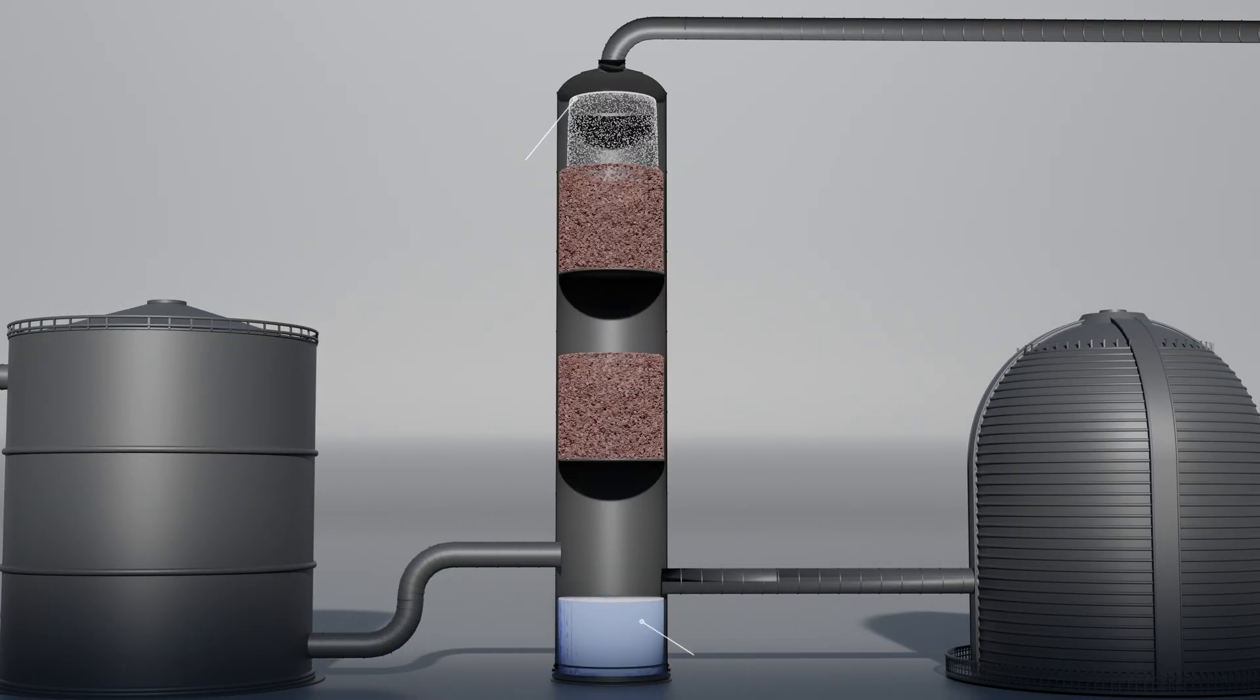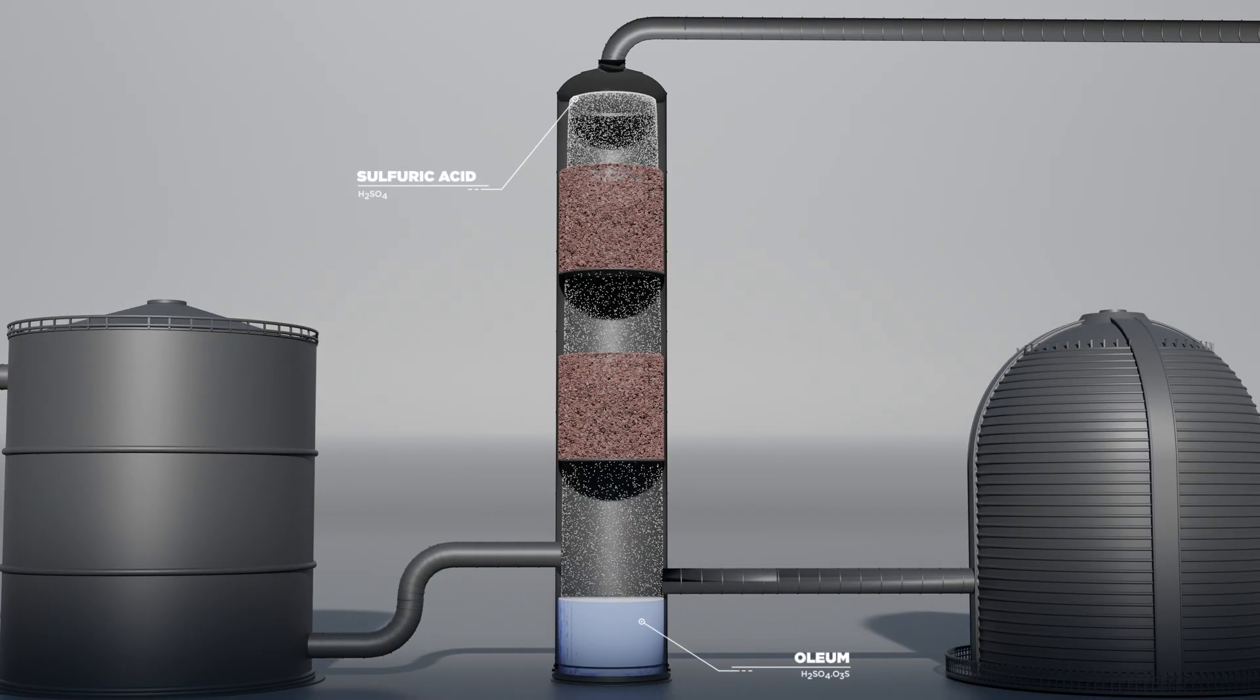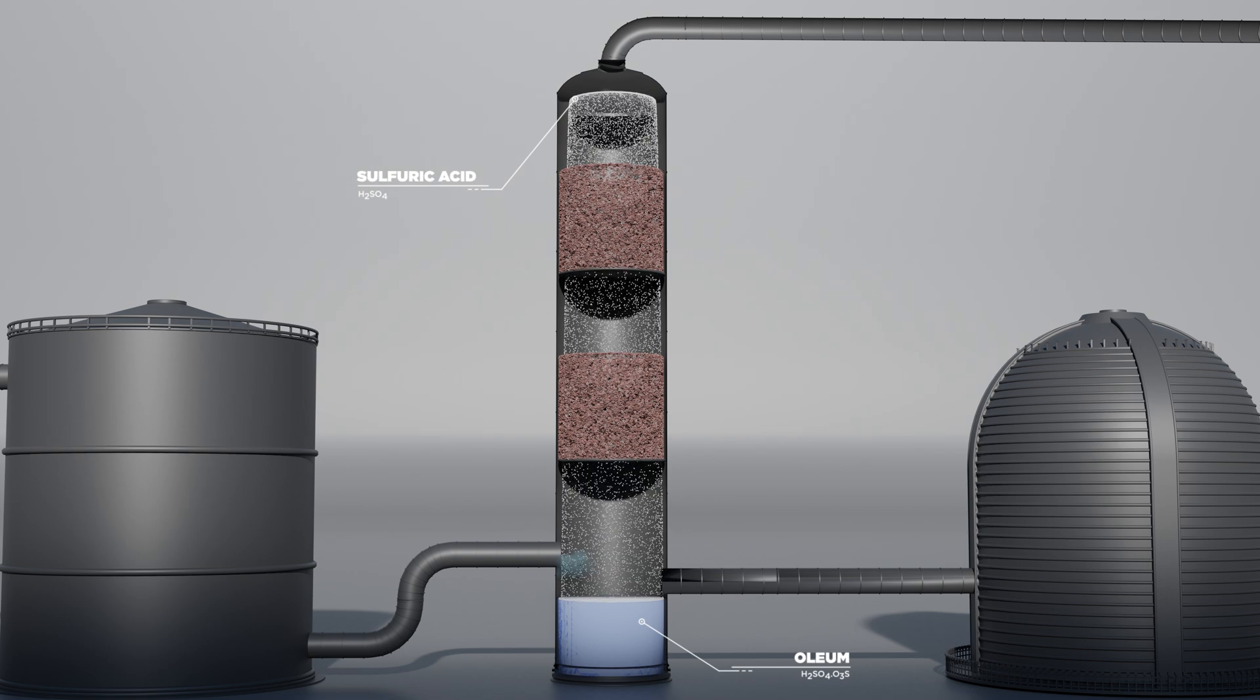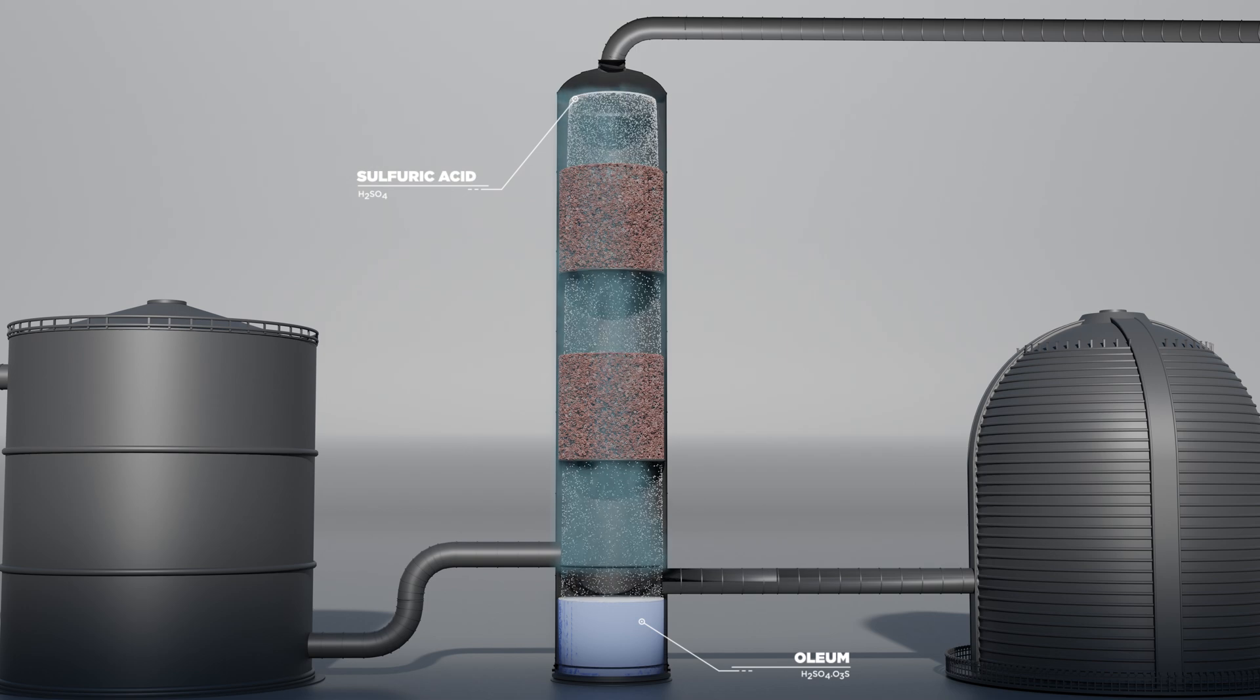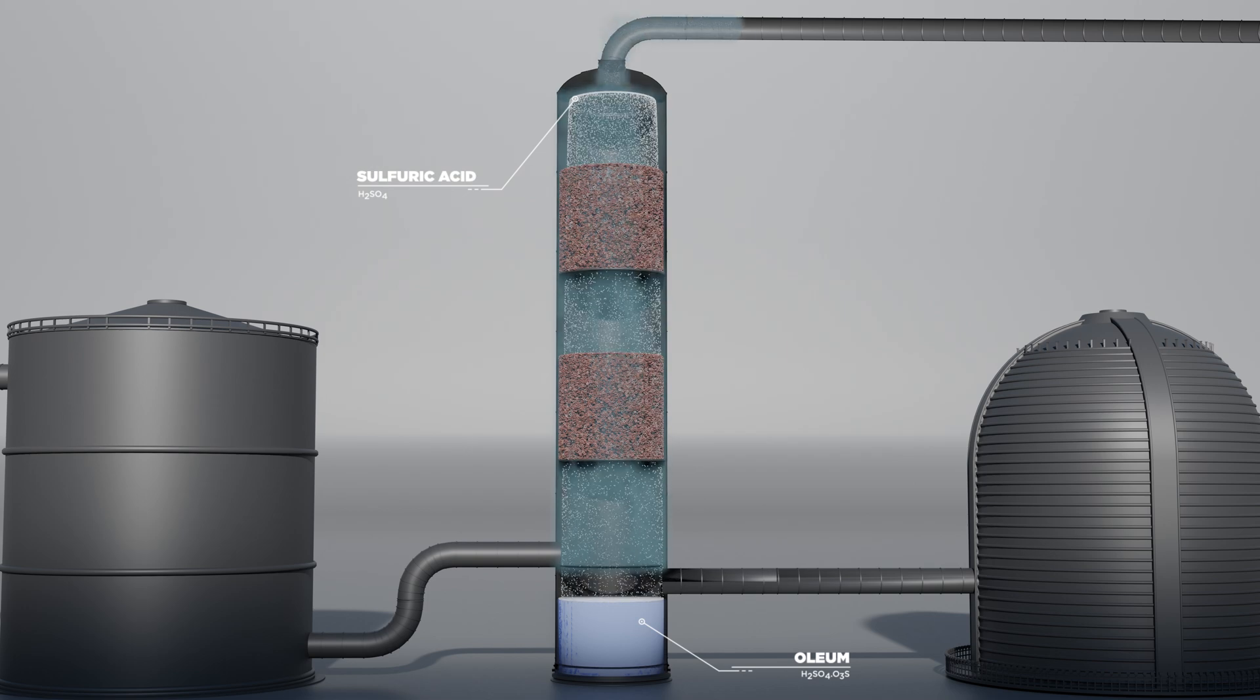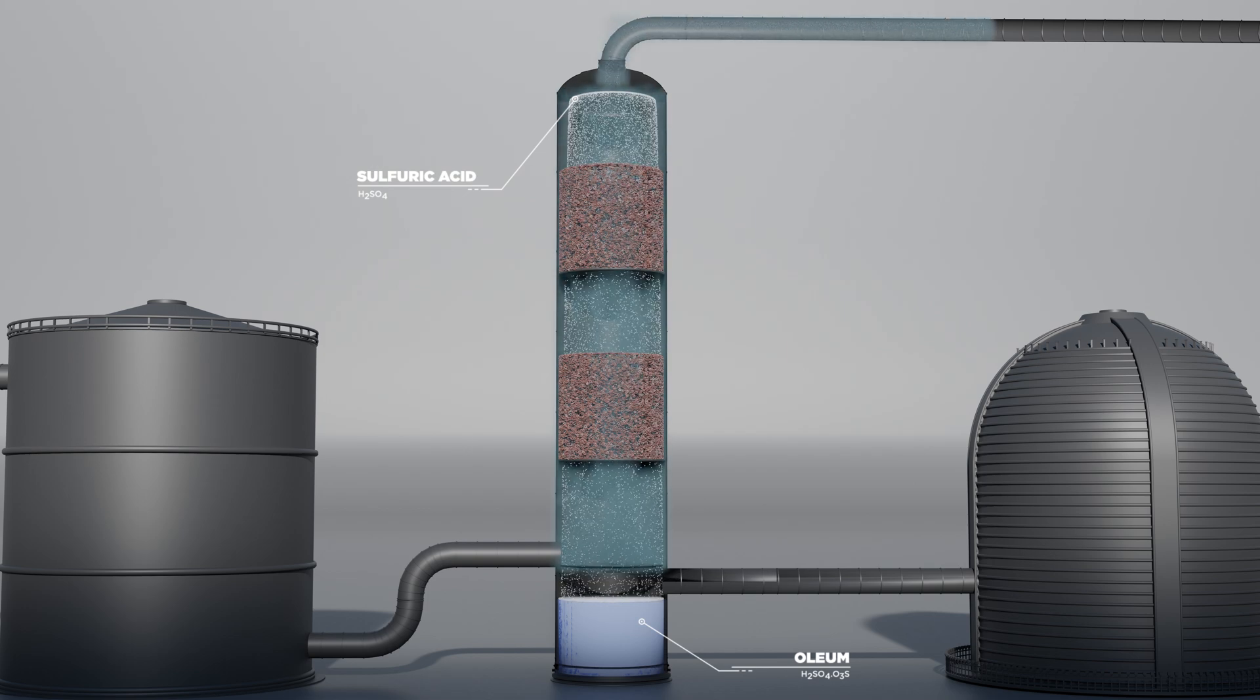Soon after, sulfur trioxide gas from the previous step passes through a ceramic filled absorption tower, where the gas will be absorbed by concentrated sulfuric acid to form oleum, which remains at the tower base to be directed to the final step.